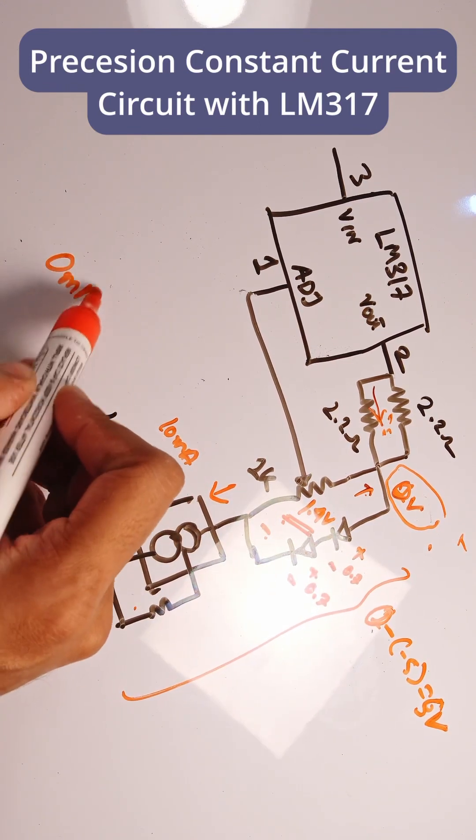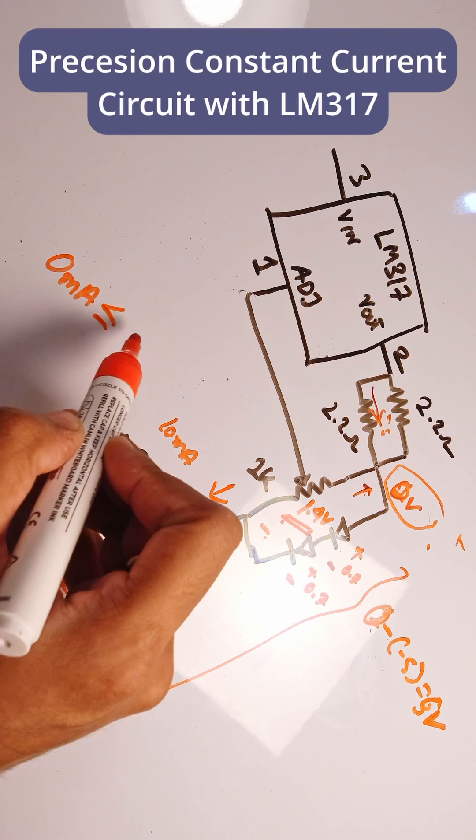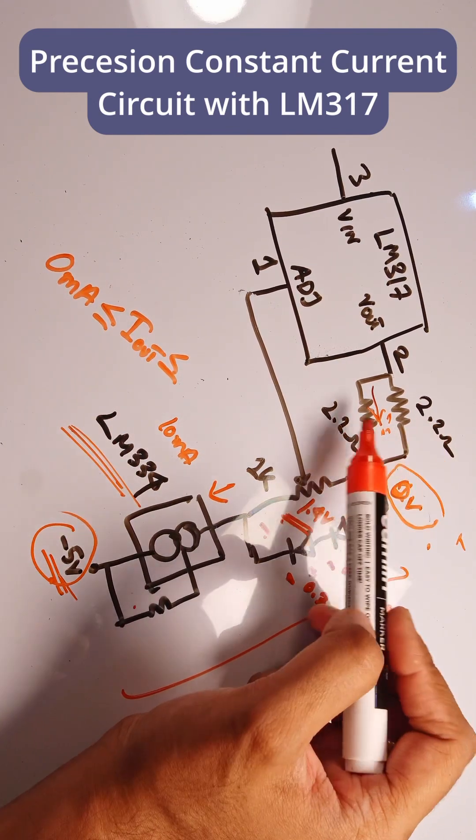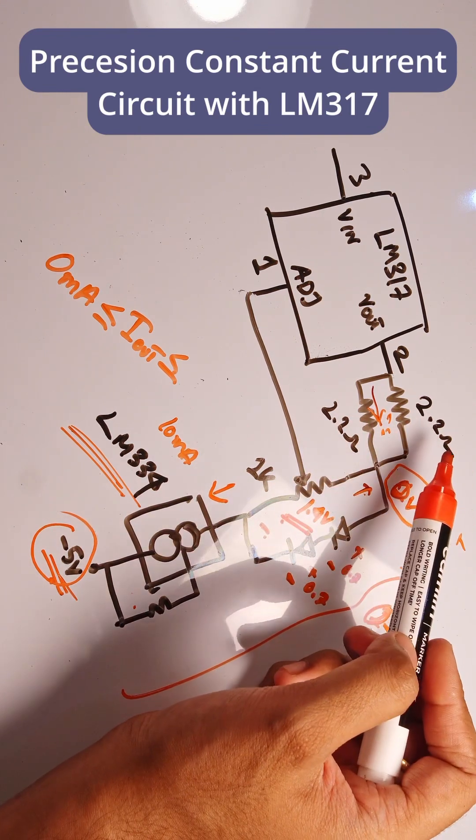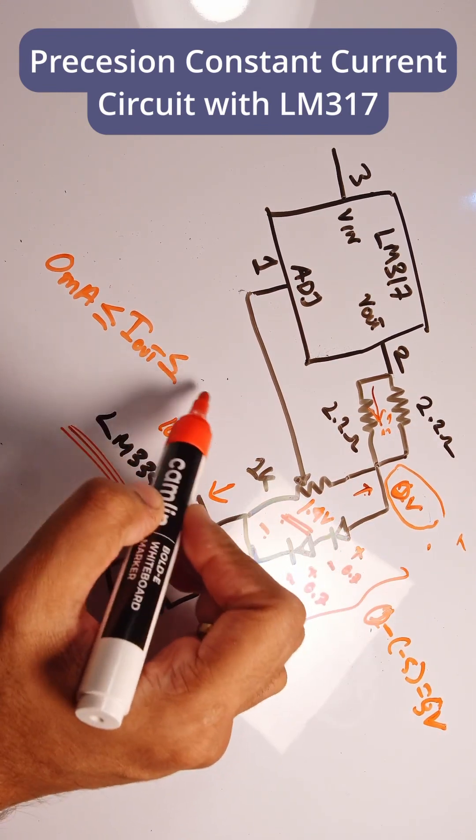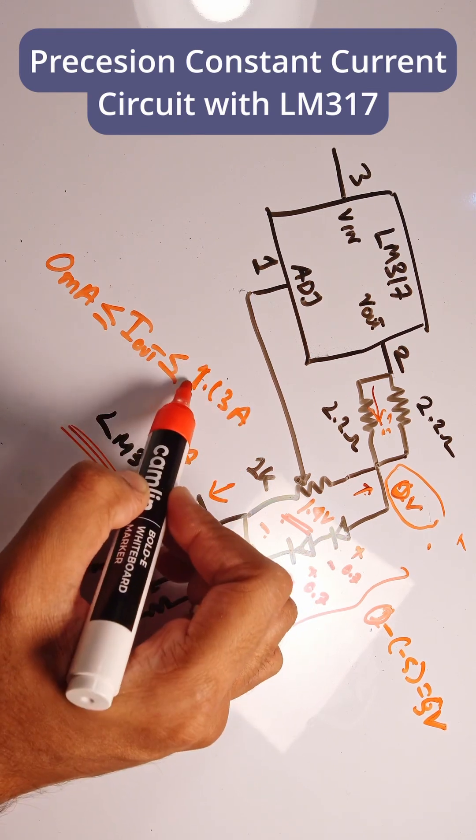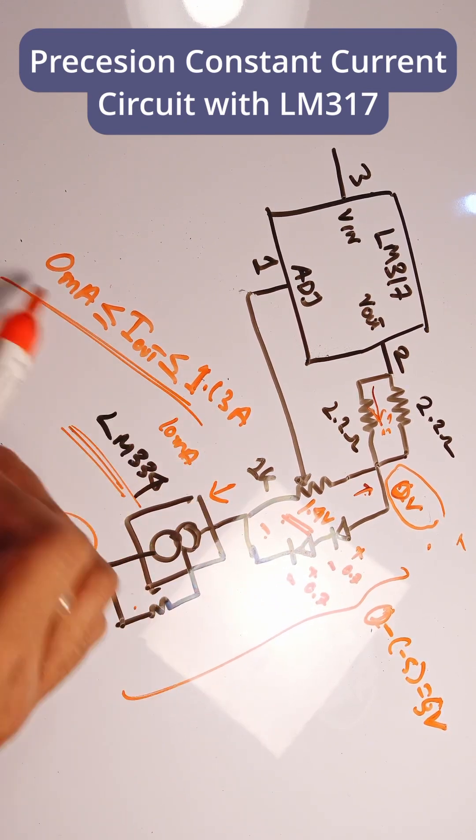I used two 2.2 ohm resistors, so it's 1.1 ohm. And if you do the equation it's 1.13 amps. So that's the current range for us.